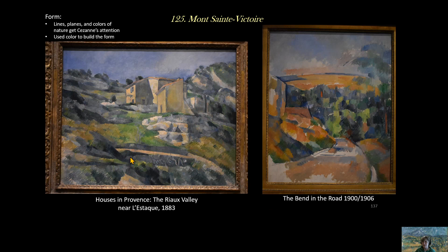In terms of form, which is probably one of the most important bits about Mont Saint-Victoire, is that Paul Cézanne uses planes — just like this is a plane, this is a plane — and colors of nature, lines as well. So line, plane, and color of nature, that's what he features in his art. And he uses color to build the form.